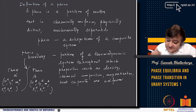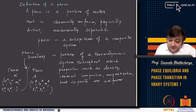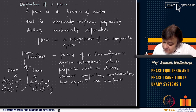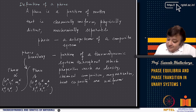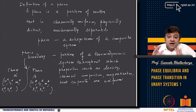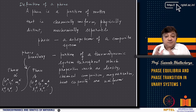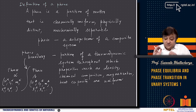A phase is a portion of a thermodynamic system throughout which properties such as density, chemical composition, magnetization, heat capacity, electric polarization or susceptibility are uniform. These should be physically and chemically distinct properties.